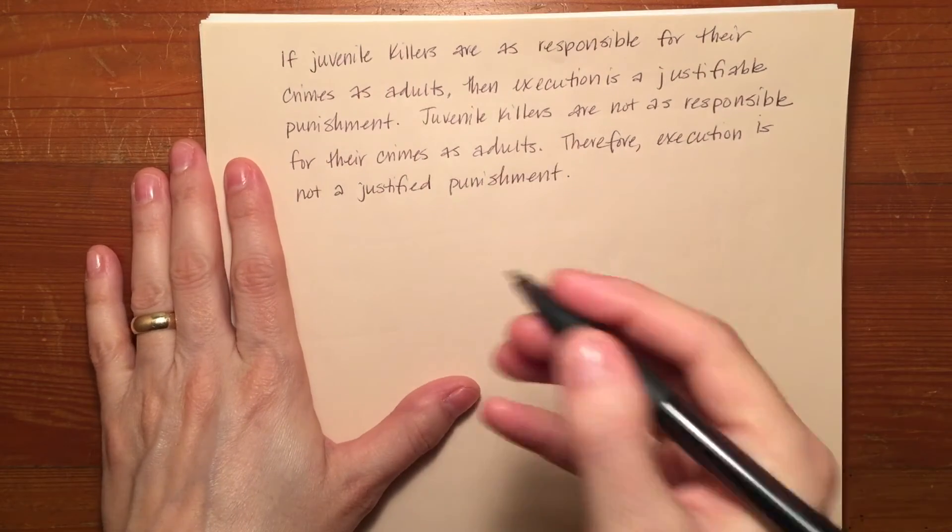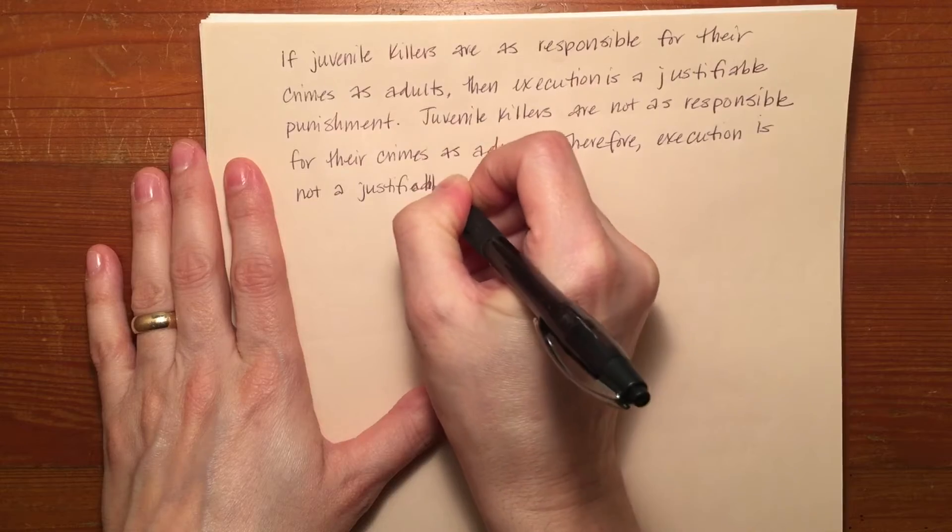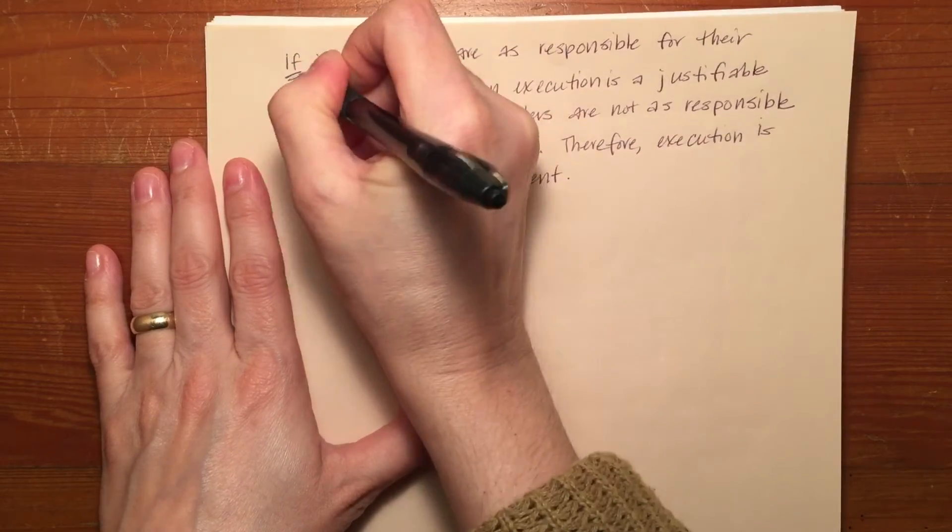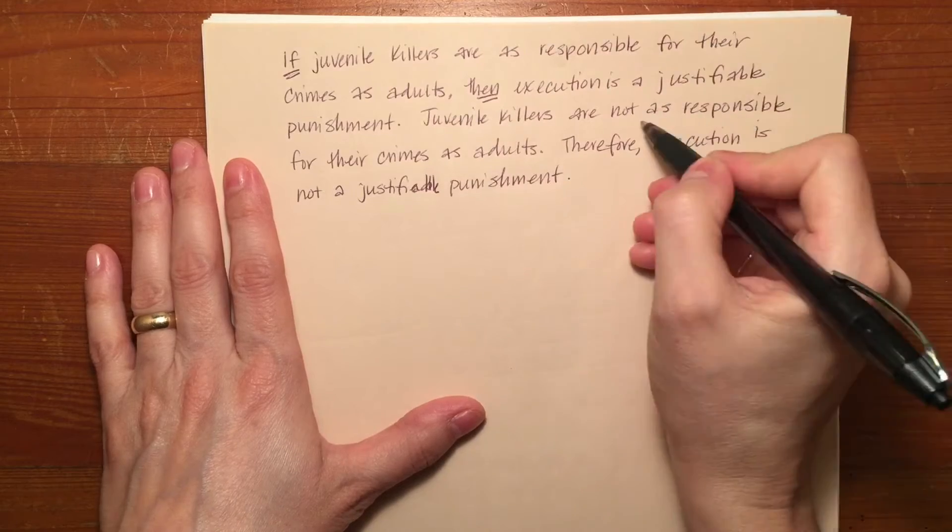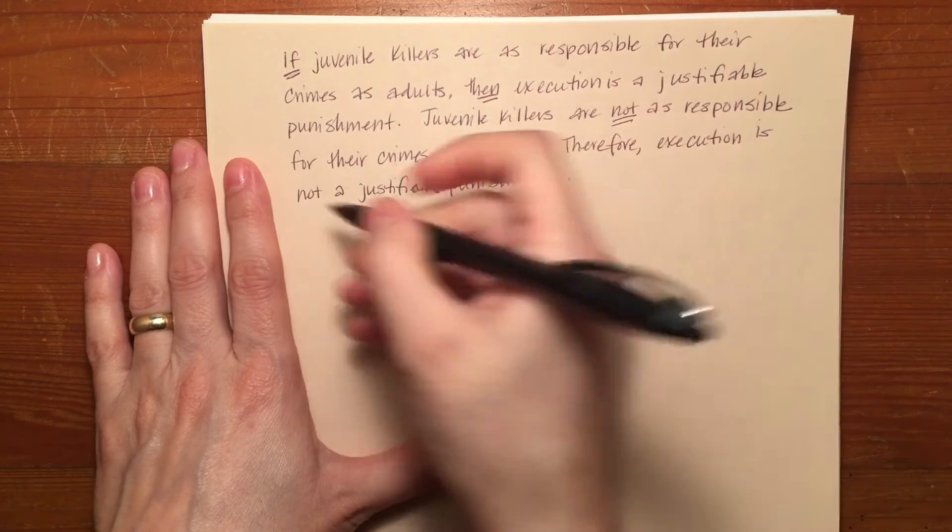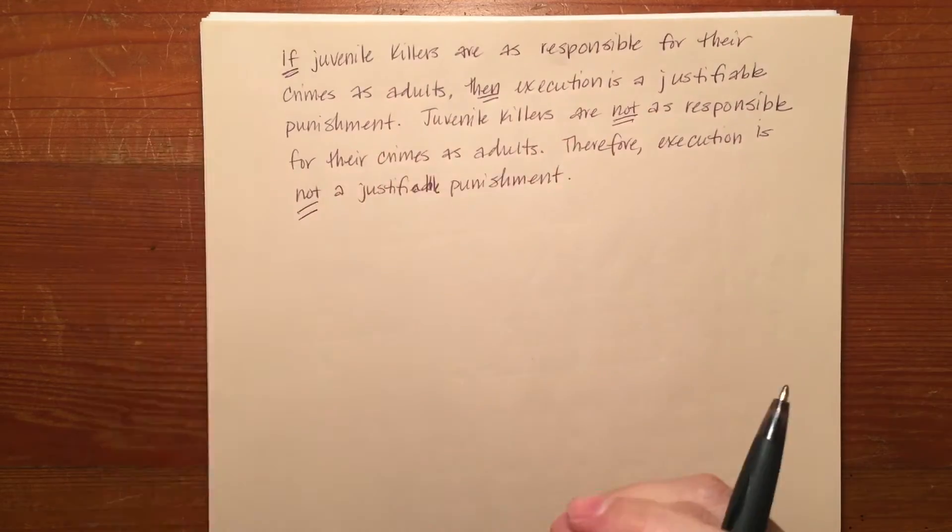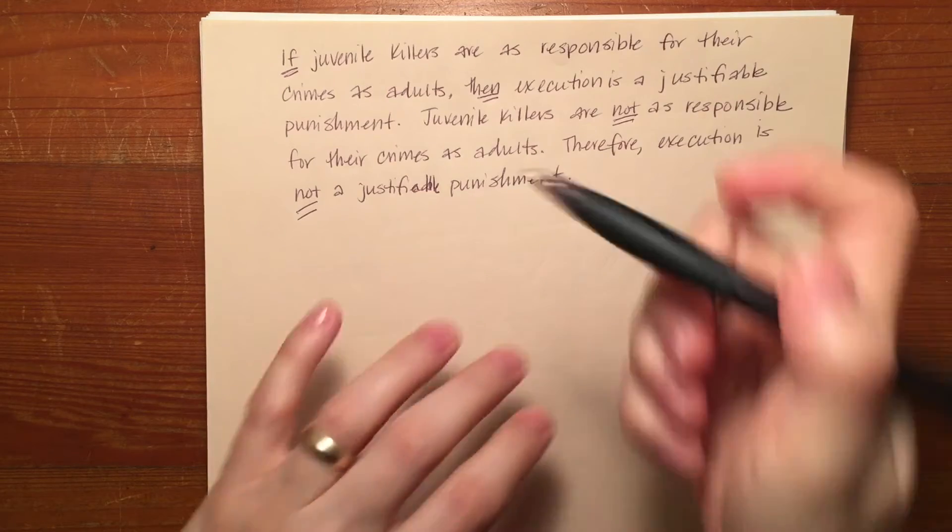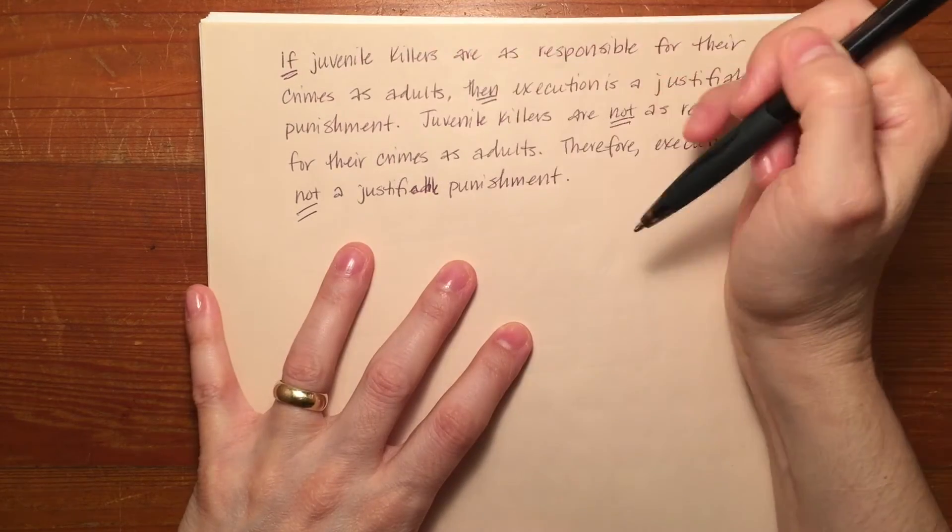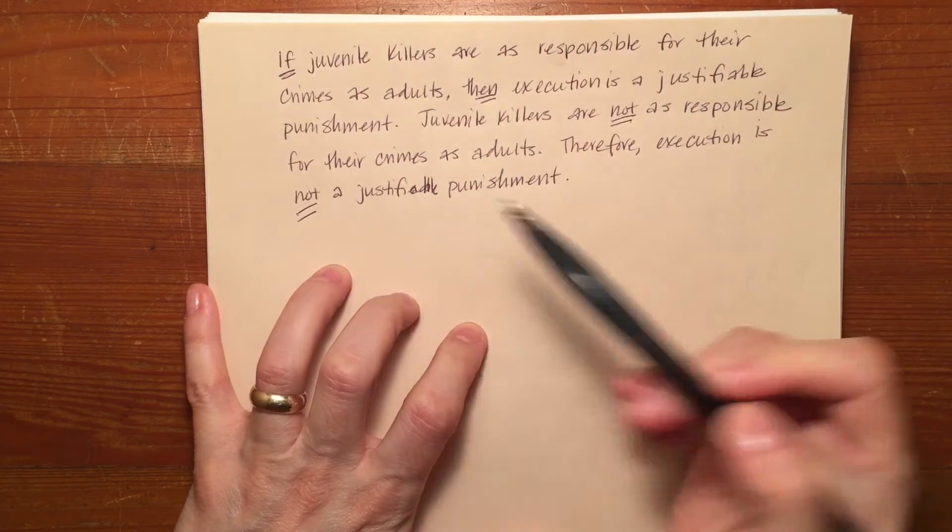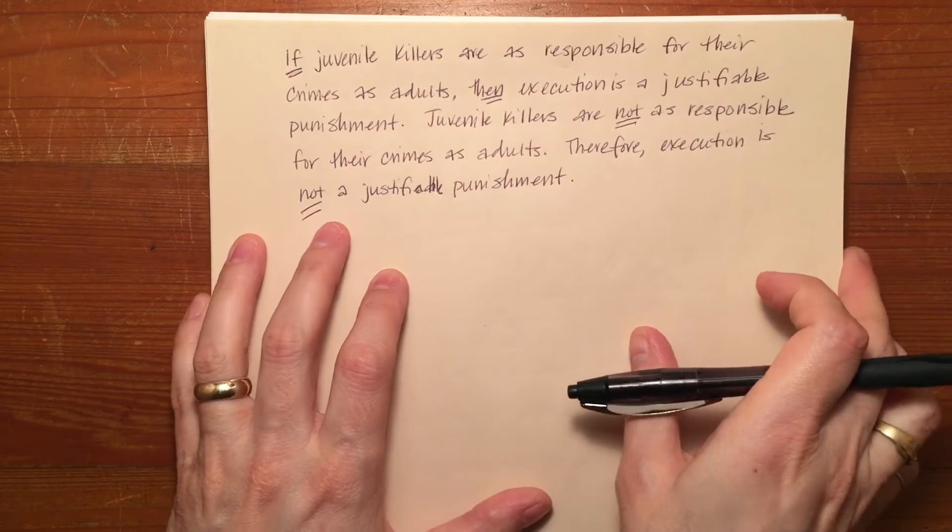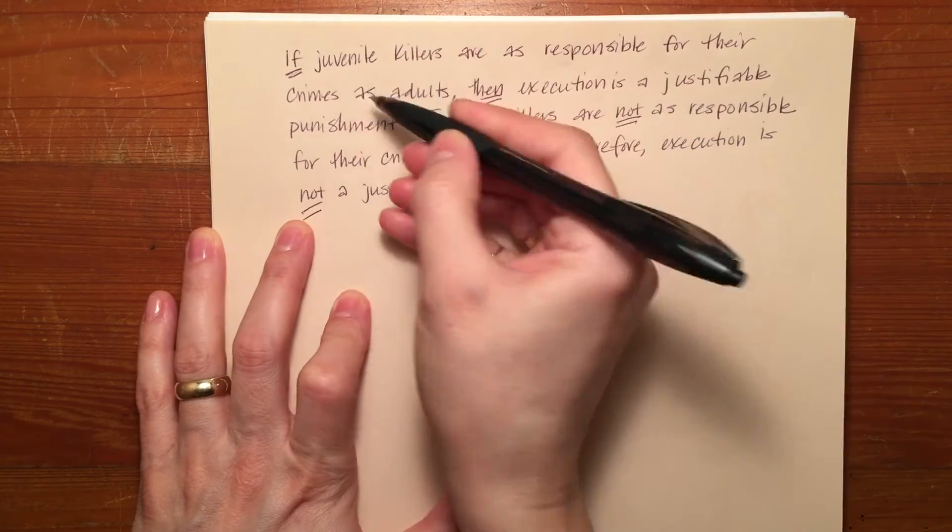Looking at this argument, I can immediately see I've got if-then, then I've got a not, and I've got a not here. So that tells me that I'm probably going to have a horseshoe for implication for my if-then statement, and I'm probably going to need some tildes to use for the not.